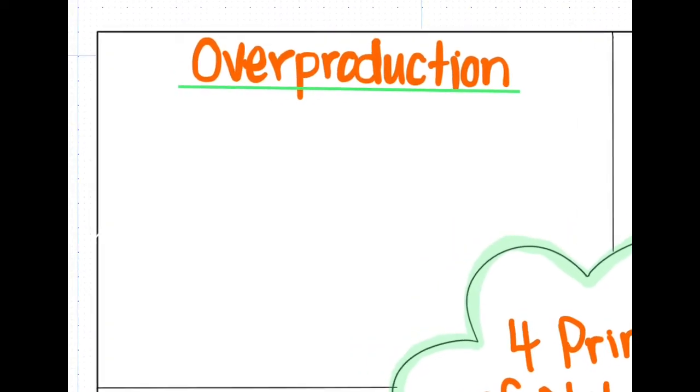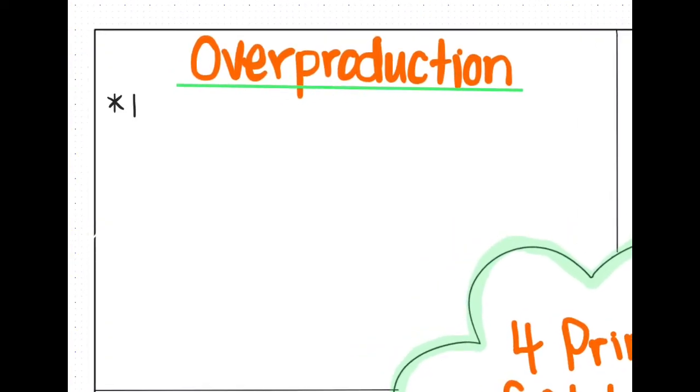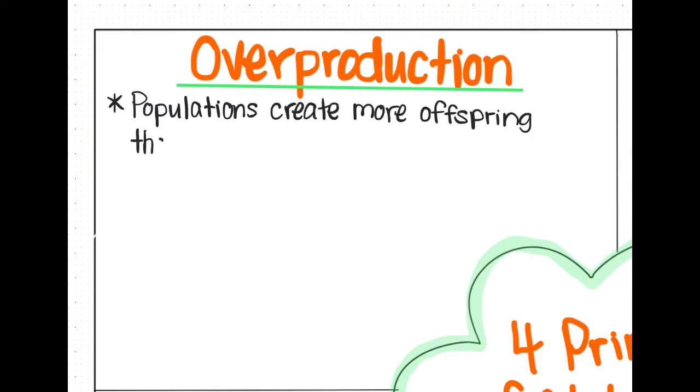Let's start with overproduction. Overproduction means that in the wild, populations tend to create more offspring than can actually survive and reproduce. Let me introduce us to our fish friends today who will show us some examples of the four principles of natural selection.